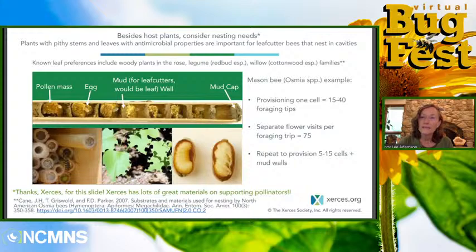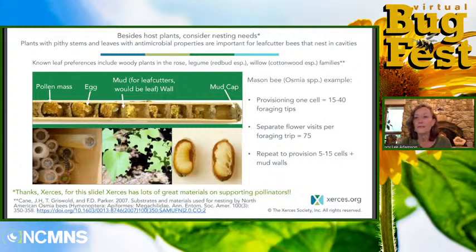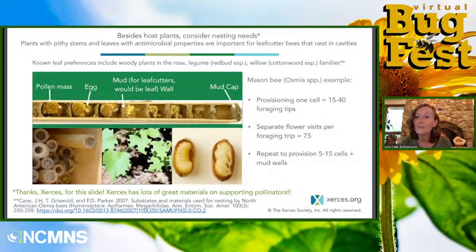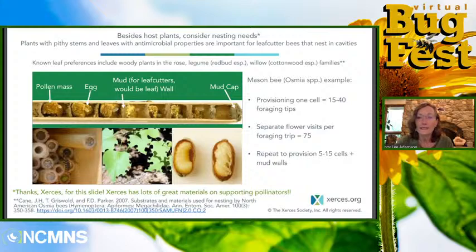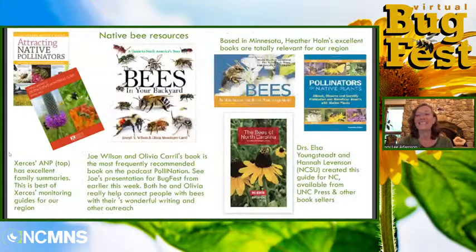Besides enough flowers nearby nests for pollen and nectar, cavity-nesting bees need appropriate cavities and nest-building materials. Leaf cutter bees also need leaves for their nests — these tend to be certain species with antimicrobial properties, including plants in the rose family, legumes like redbud, willow, cottonwood, and things like that. Here are some book recommendations — I hope many of you got to see Joe Wilson's program yesterday. He and co-author Olivia Carroll of Bees in Your Backyard are just wonderful educators. They also have an Instagram site and post to YouTube. You can see his Bugfest program on the NC Museum of Natural Sciences' YouTube channel.